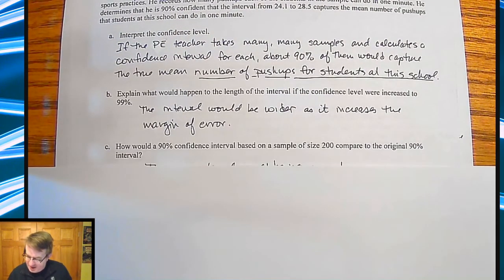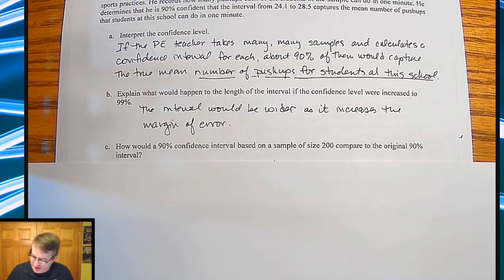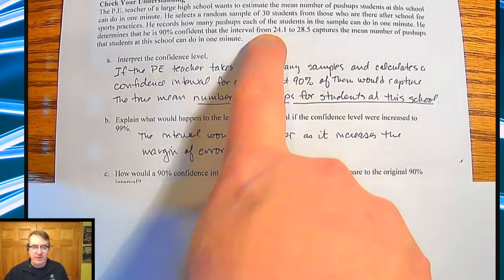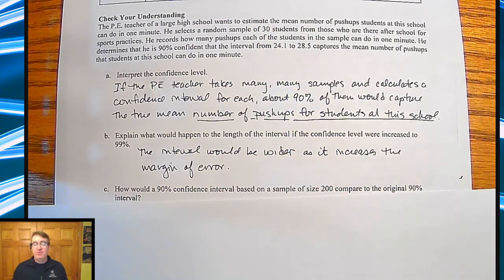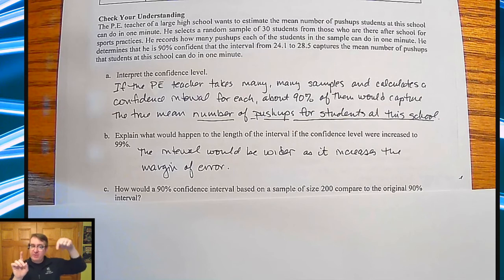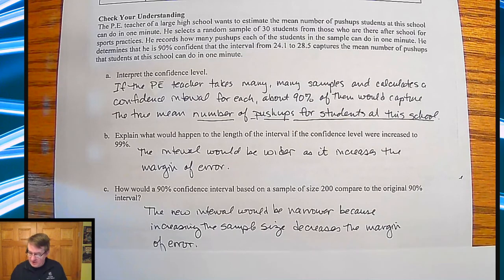And then for part C, how would a 90% confidence interval based on a sample size of 200 compare to the original interval? Because remember, he only did 30. So if you went up to 200, increase the sample size, the margin of error goes down because it's going to tighten everything up. And so that means the new interval would be narrower because increasing the sample size decreases the margin of error.